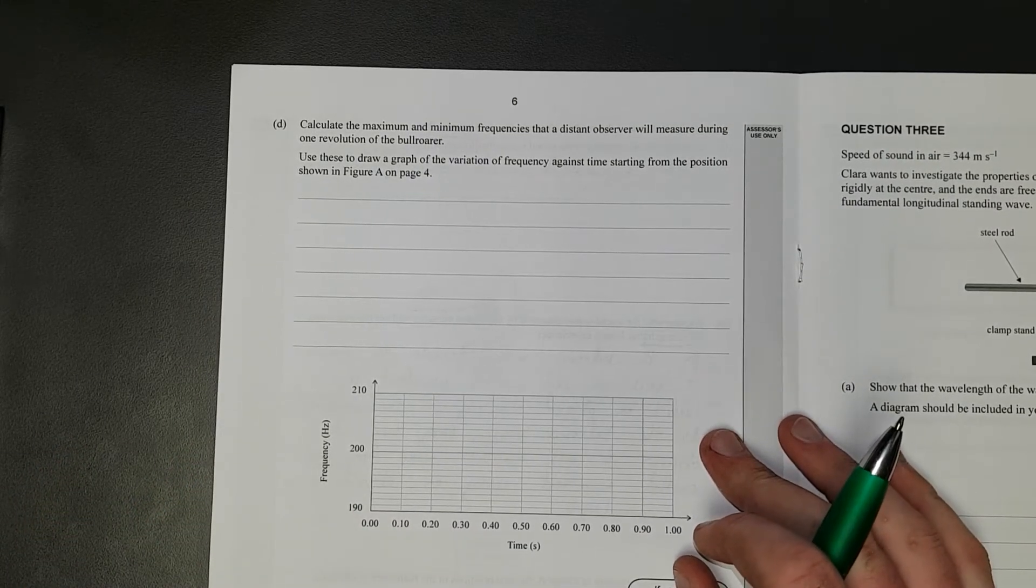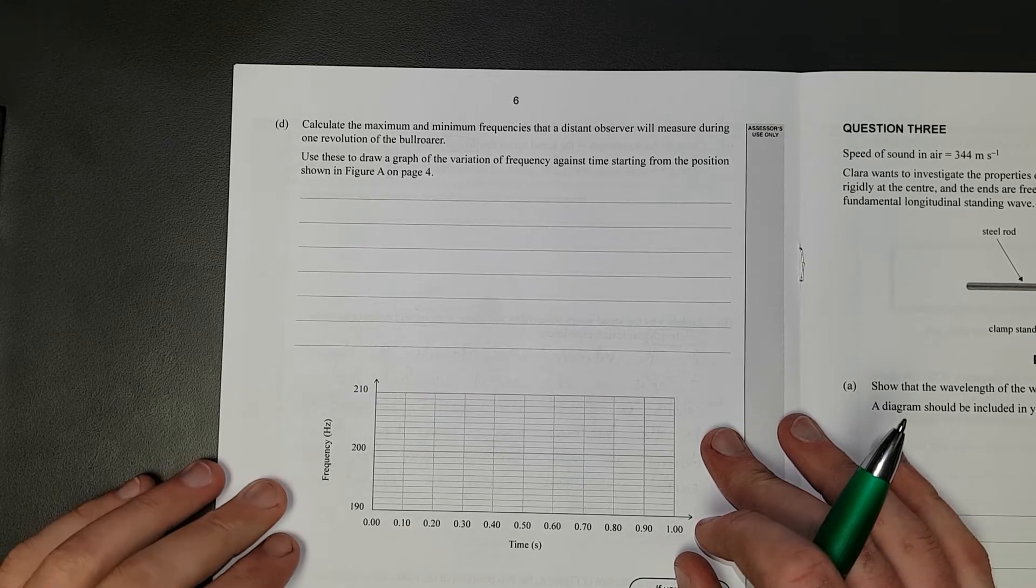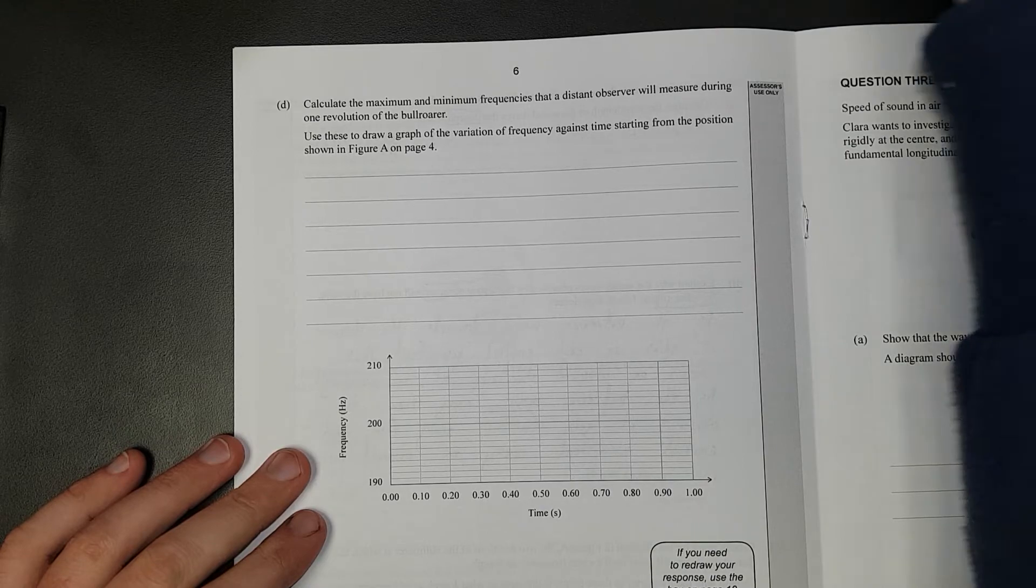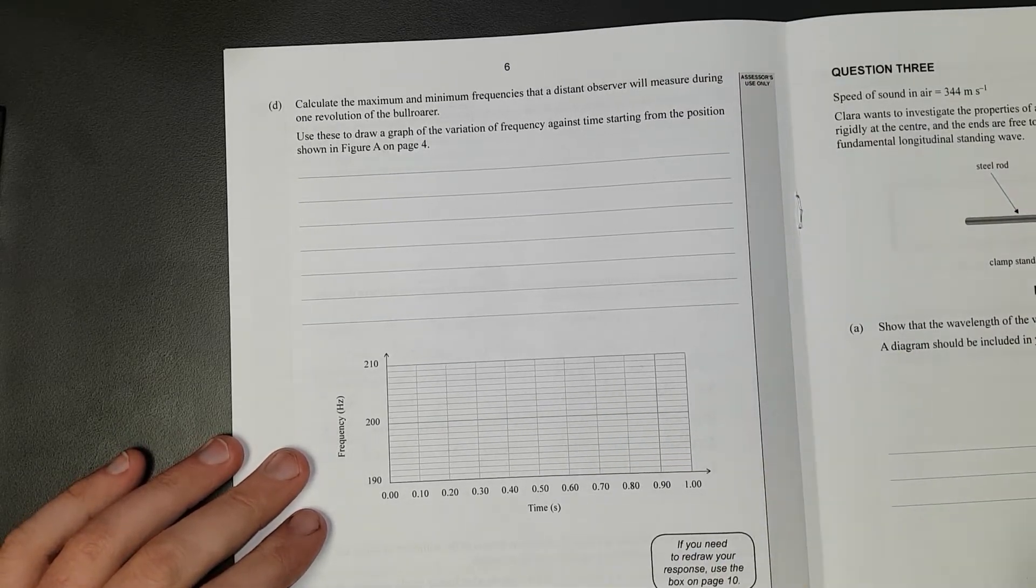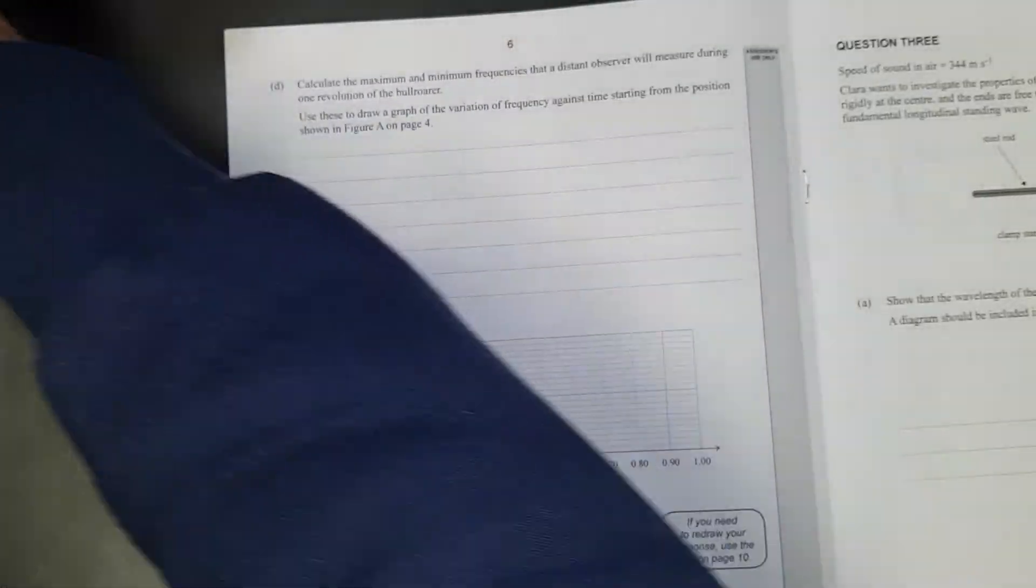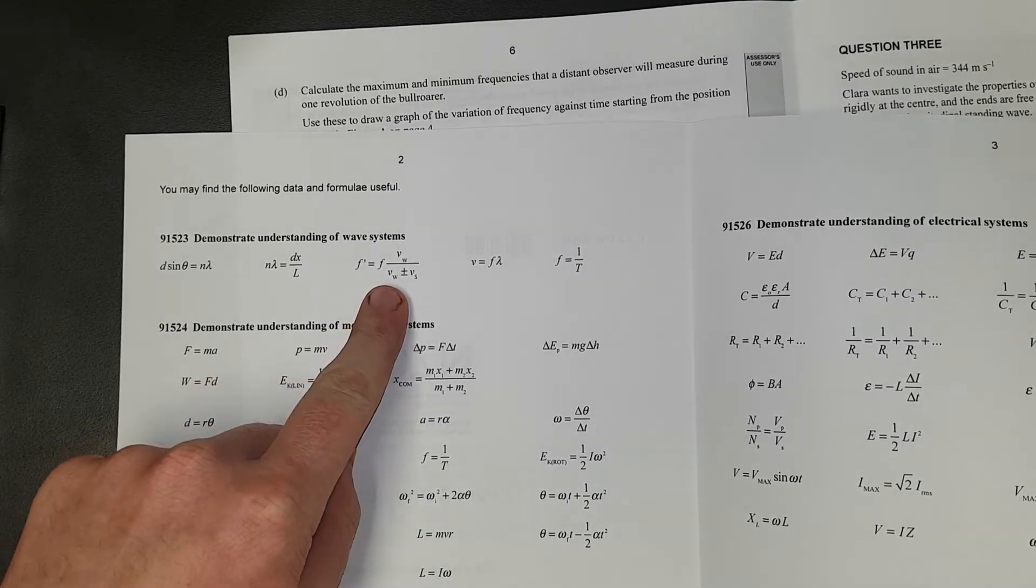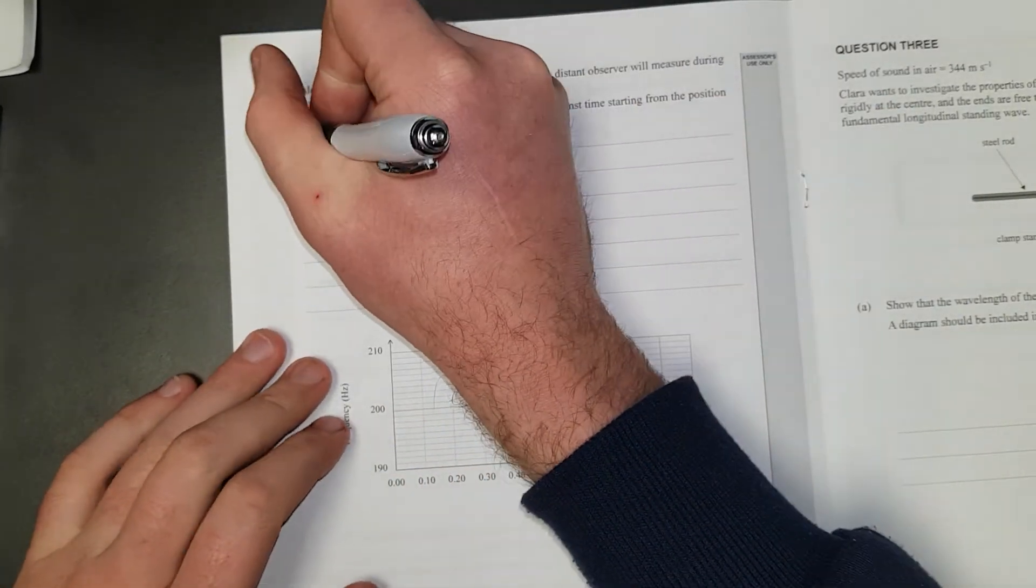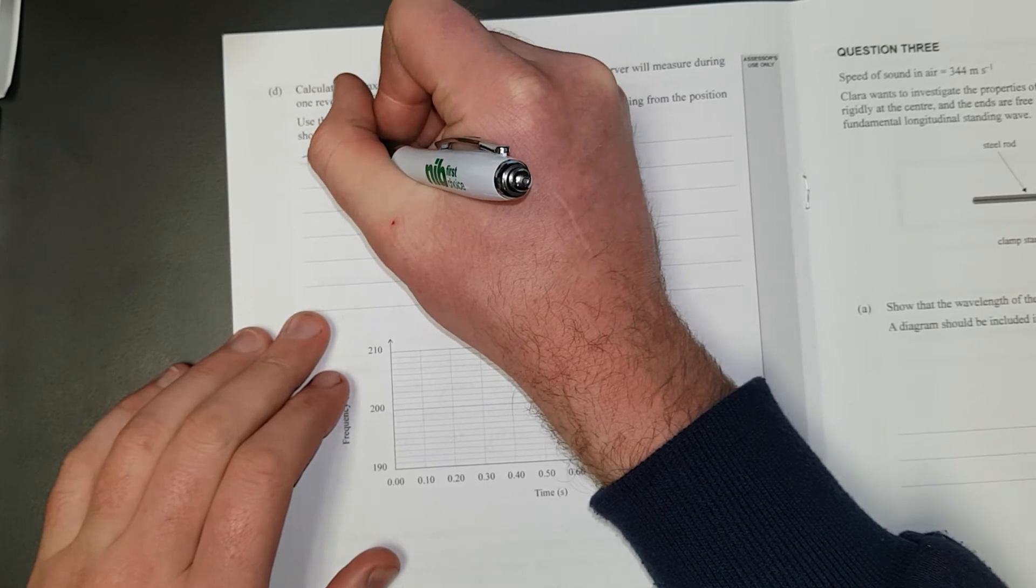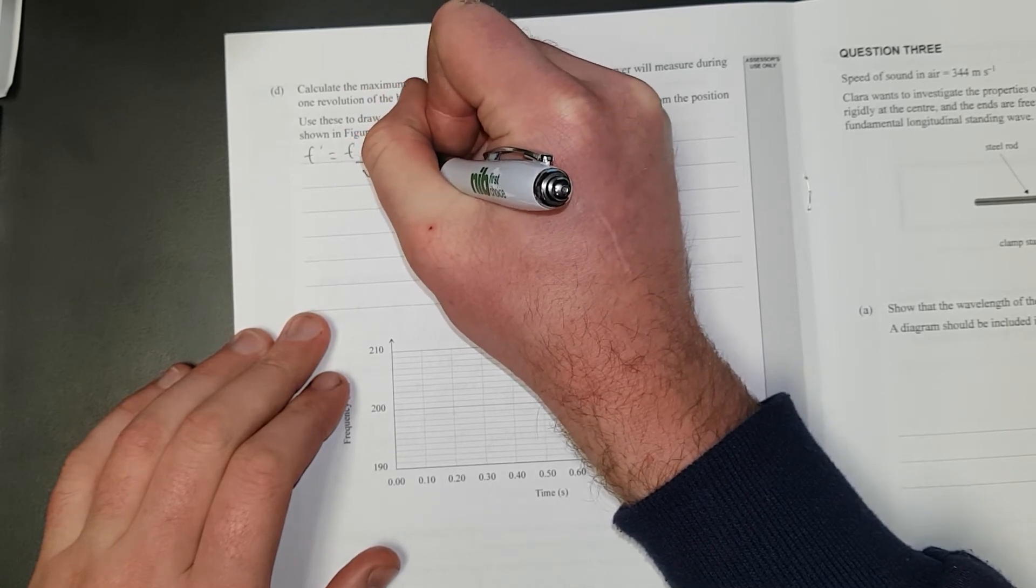Calculate the maximum and minimum frequencies of the distant observer will hear or measure during one revolution of the bullroarer. Use these to draw a graph on the variation of frequency against time starting from position shown in figure A. So what are we going to do? We are going to use a formula, which is in your formula sheet. It is the Doppler formula. So I'll write it. f' is equal to f times velocity of the wave divided by velocity of the wave plus or minus velocity of the source.